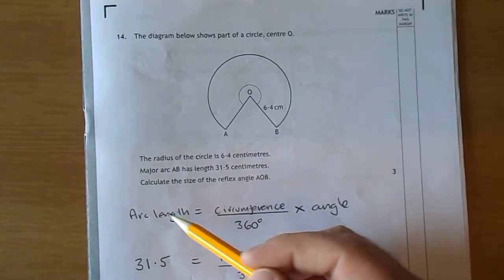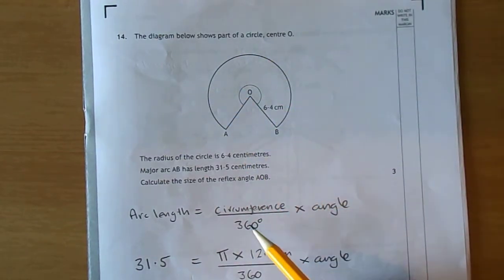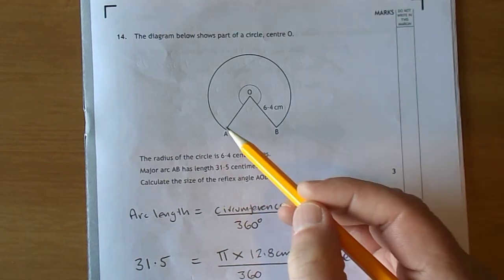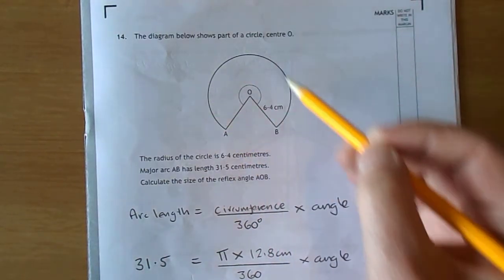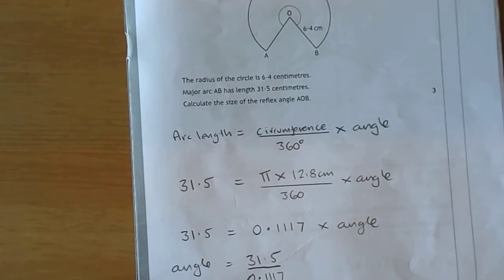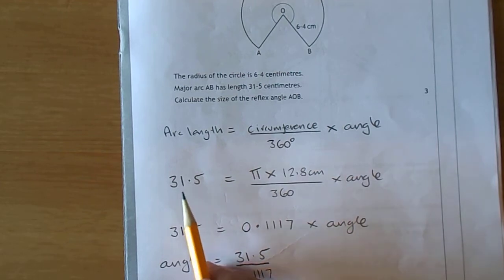The length of an arc is the circumference divided up into 360 little bits, then times it by the angle to get that there. They actually tell you the arc length - sometimes you're asked to find it, but they tell you that's 31.5.